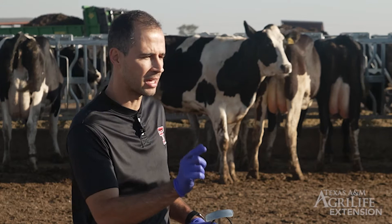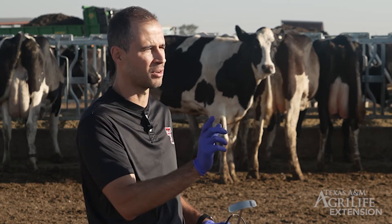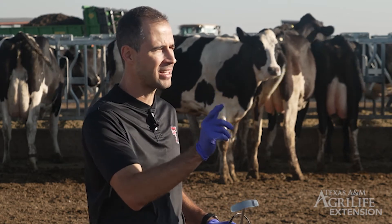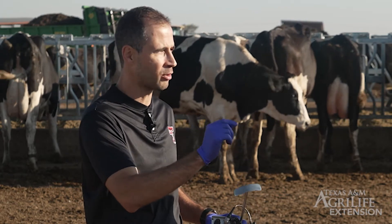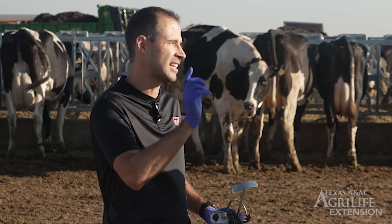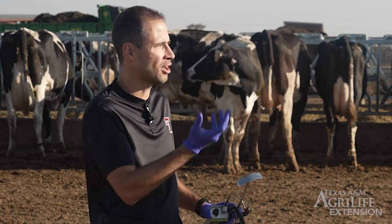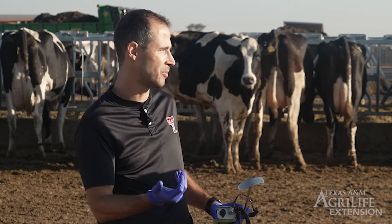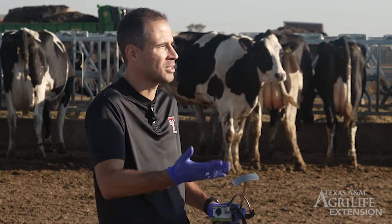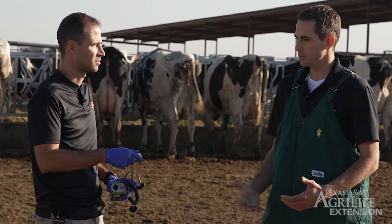Retained placenta and metritis are associated because when a cow has retained placenta, she generally has poor immunity. The final mediation of separation of the placentomes is driven by neutrophils — immune cells that come from the bloodstream into the placentomes to mediate that separation. So neutrophils are very important. The second link is that the hanging placenta may provide a pathway for bacteria to travel through the birth canal from the environment into the uterus, increasing the risk of metritis.